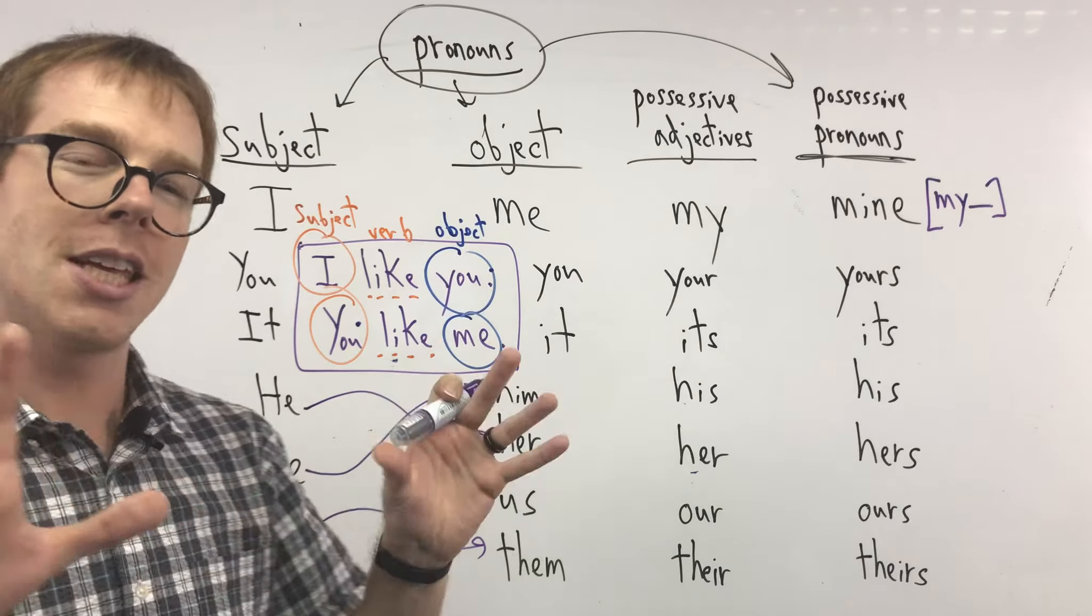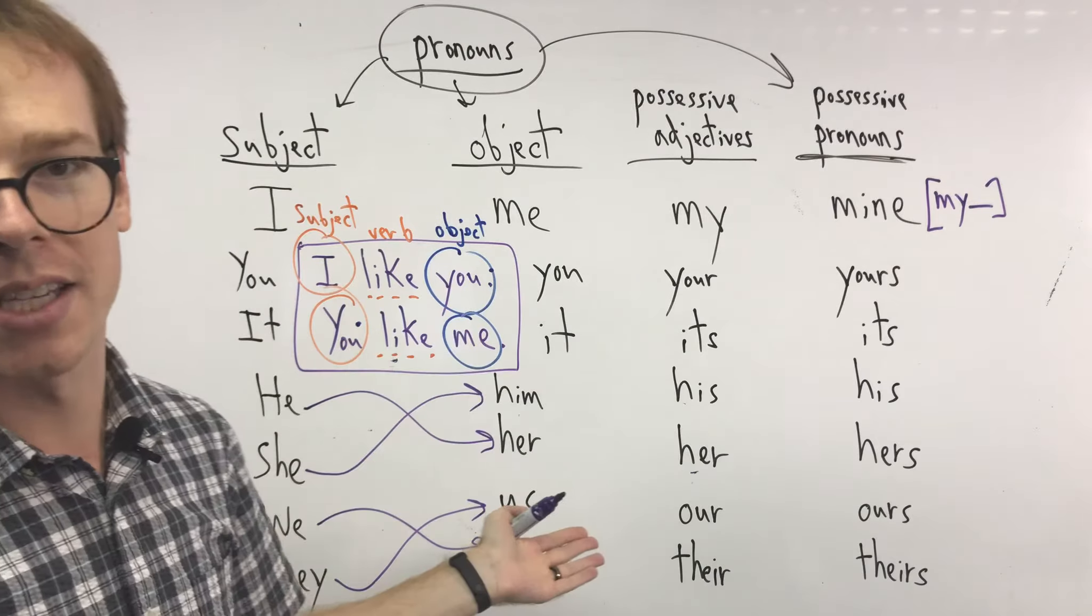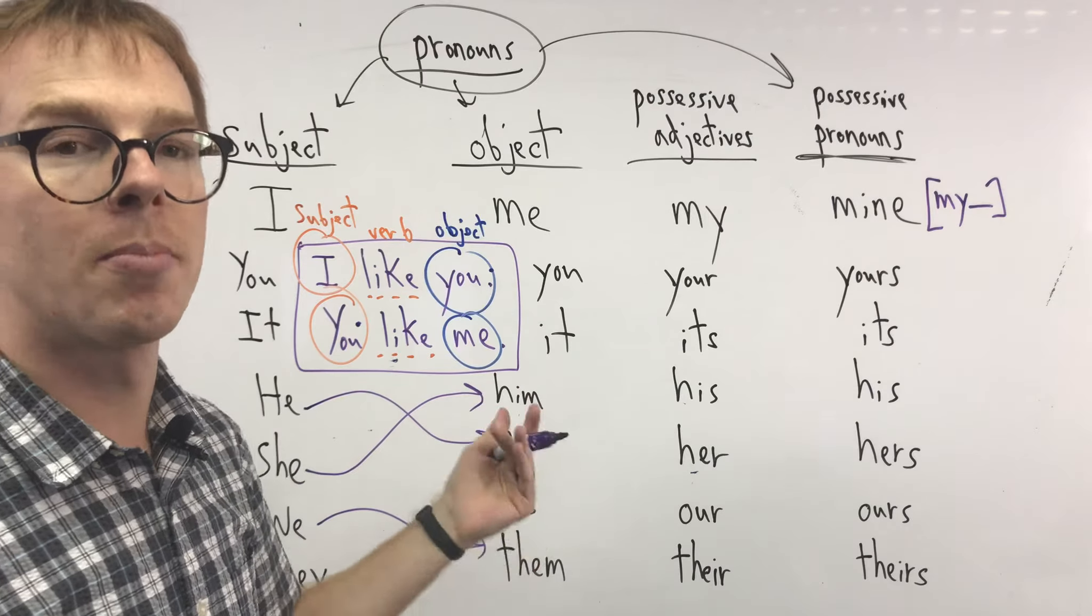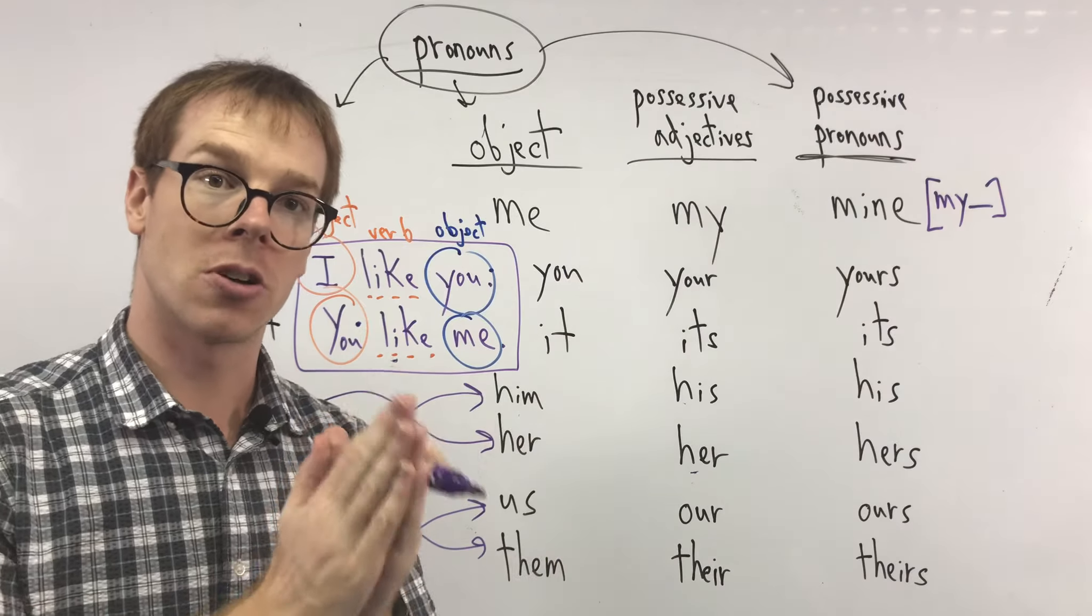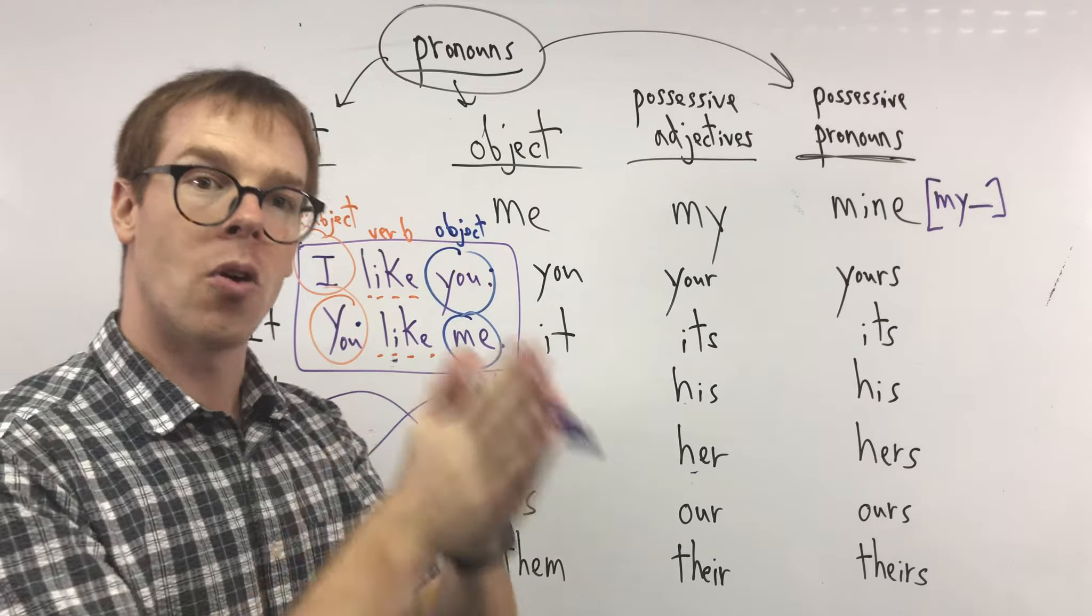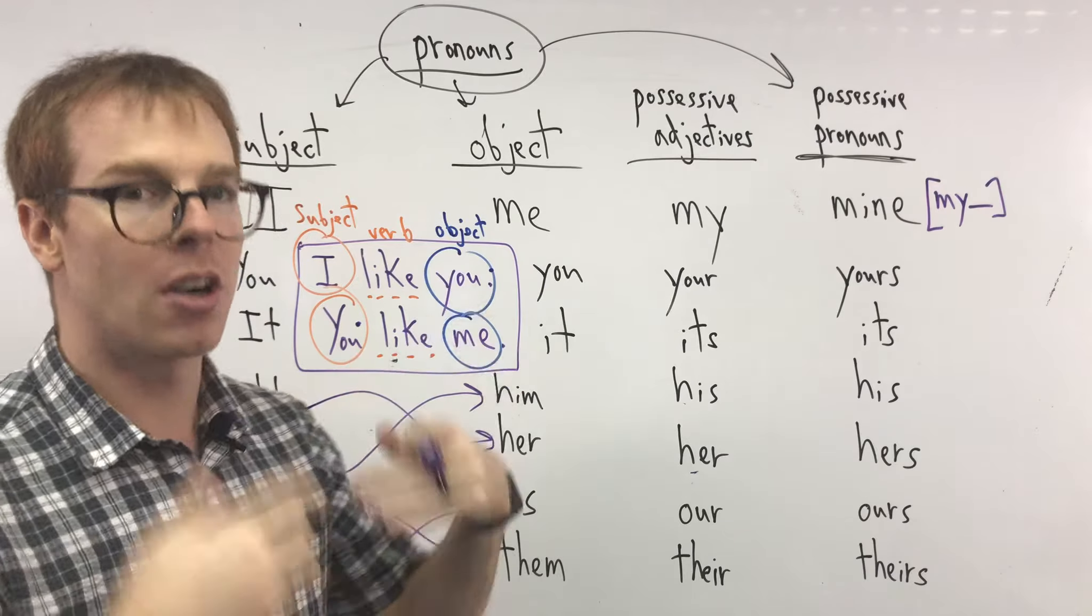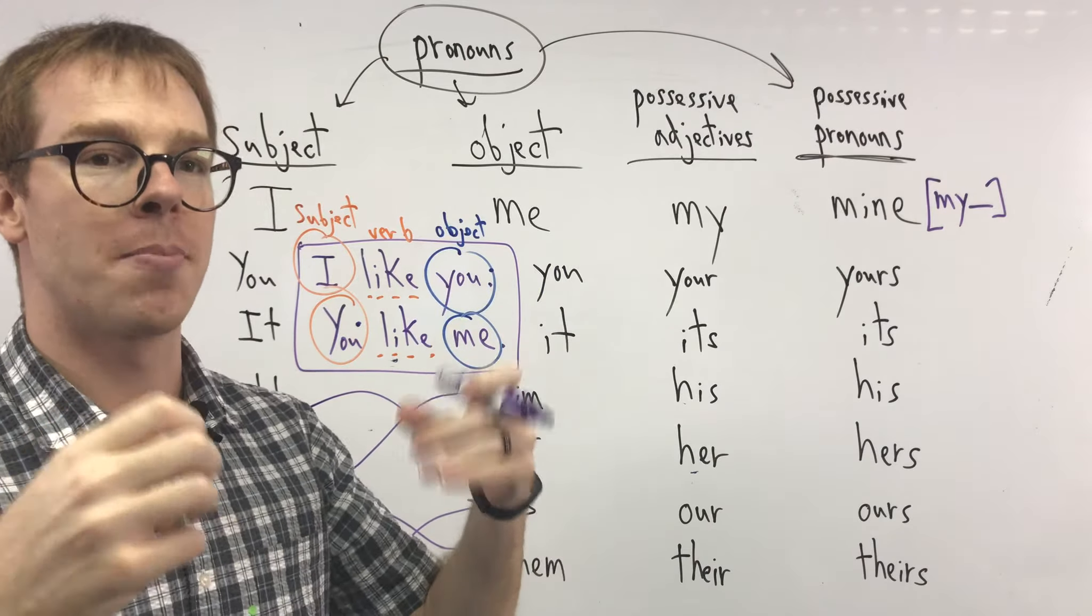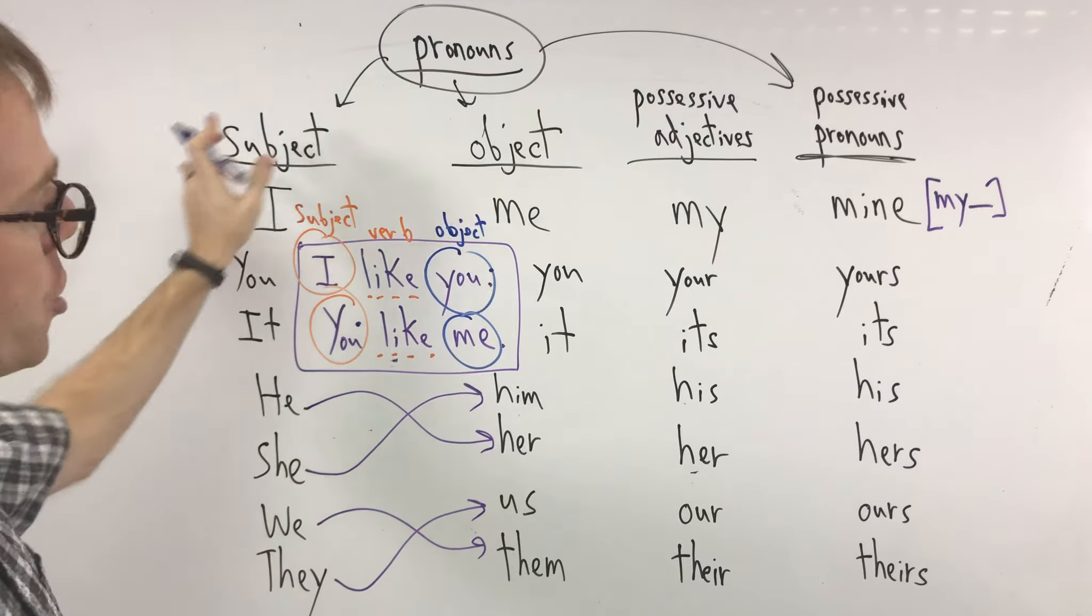So if you haven't learned these already or you haven't seen them before, you have to memorize. There's no easy way to remember these. You have to practice them. You can practice with your teacher in class or practice at home writing sentences and commenting below, but you need to make sure you use these enough that they become easy for you. That's subject, object.